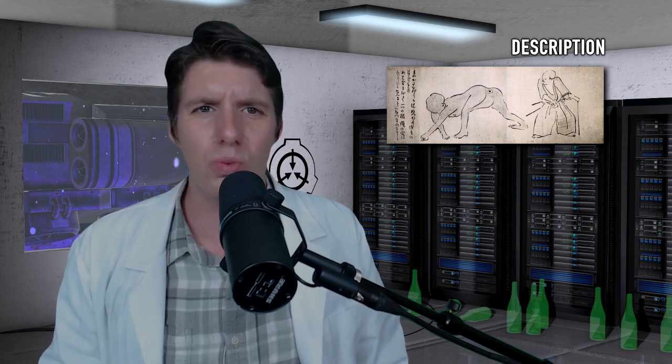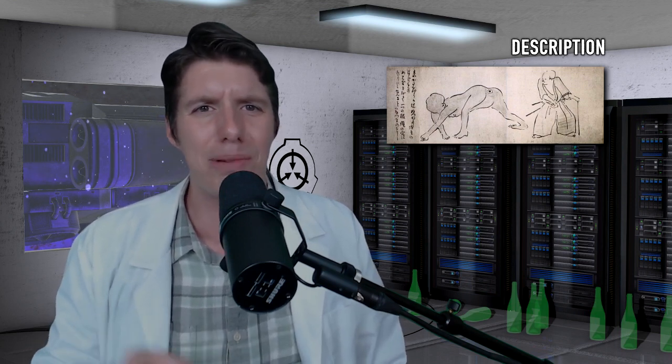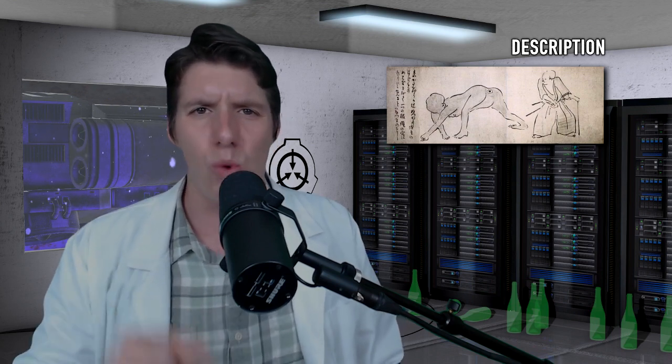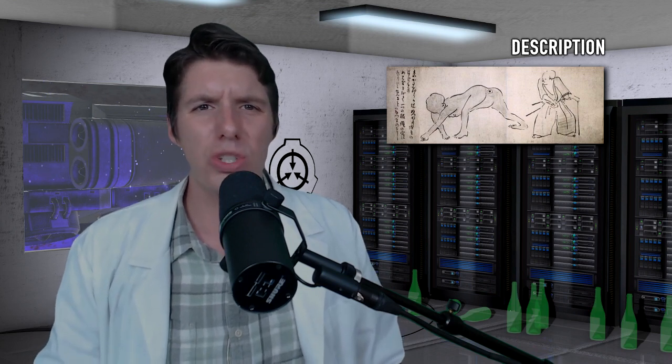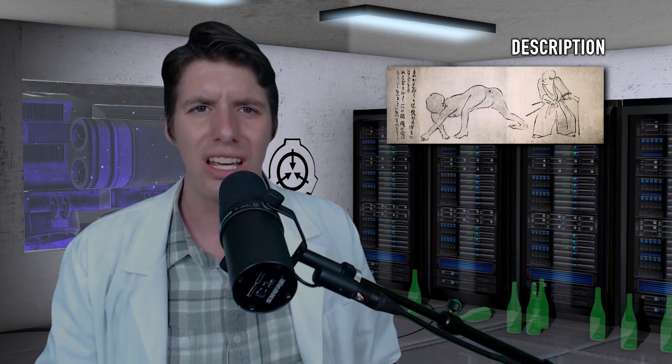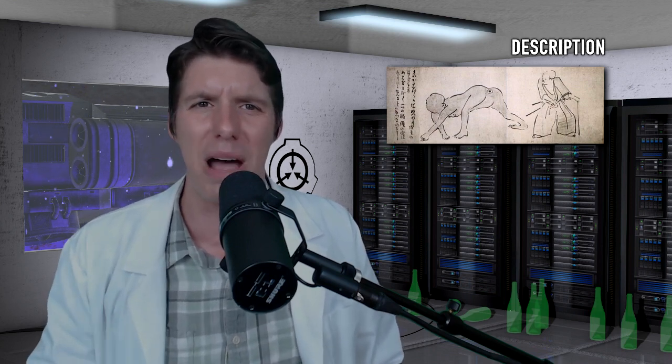The eight legs fuse to the host's rectum, at which time the SCP-5950 instance will secrete a complex toxin composed of propofol, pentobarbital, theopentyl, sodium chloride, and water. This toxin puts the host in a semi-comatose paralytic state during the duration of the infestation. The SCP-5950 instance then attaches its two tentacles to the host's spinal cord and assumes full control of the body.